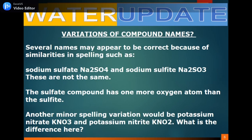Variations of compound names. Several names may appear to be correct because of similarities in spelling, such as sodium sulfate and sodium sulfite — but these are not the same. The sulfate compound has one more oxygen atom than sulfite. Another minor spelling variation would be potassium nitrate (KNO₃) and potassium nitrite (KNO₂). The difference is one more oxygen atom in potassium nitrate than in potassium nitrite.